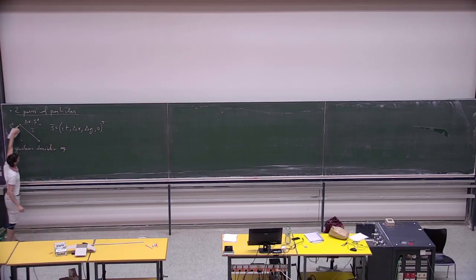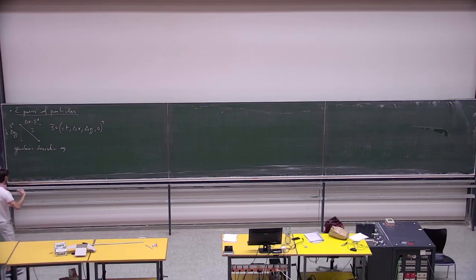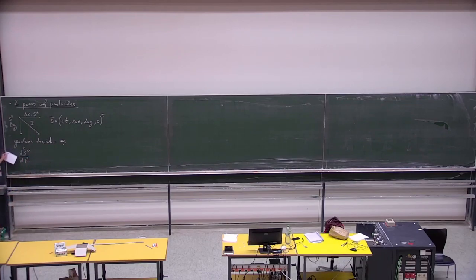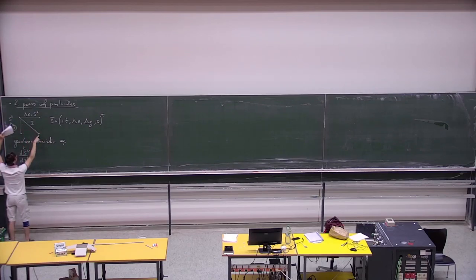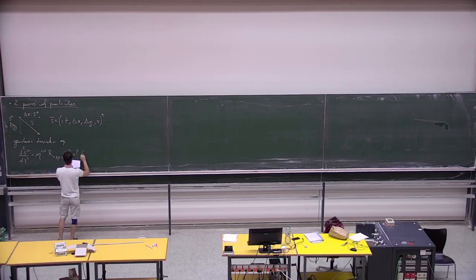The geodesic deviation equation involves a vector located on a geodesic, and we ask how this vector changes in size as we run along a geodesic line. Remember we are in 4D, so running can also be along time — this gives the evolution. We write down the geodesic equation, associated with a sort of acceleration: d²sᵅ/dτ² = -R^α_{γβα} u^γ u^β s^α.